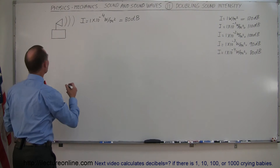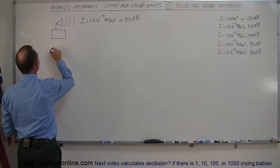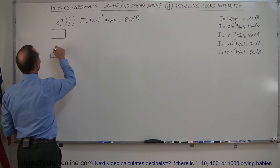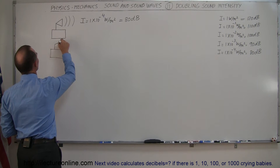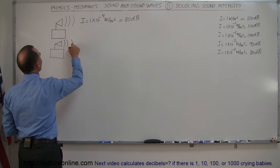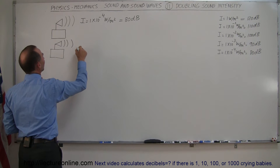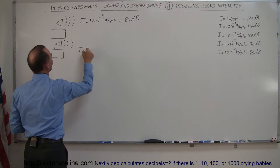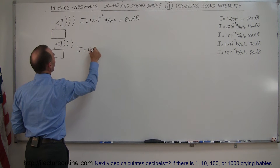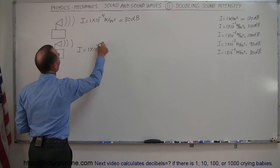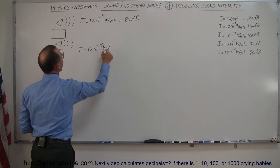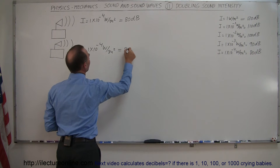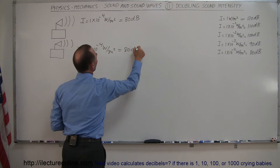Now let's say there is a second loudspeaker putting out sound with the same intensity. This also puts out intensity equal to 1 times 10 to the minus 4 watts per square meter, so that's also equal to 80 decibels.